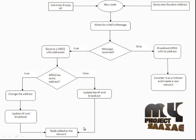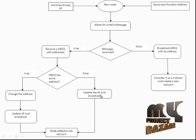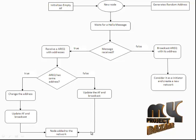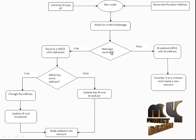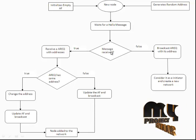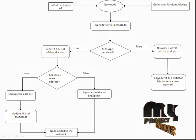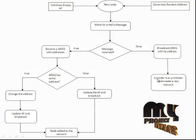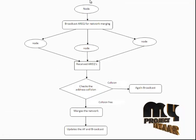The node is then joined in the network. If no address collision occurred, it updates the address filter, broadcasts the message, and joins the network. If no hello message is received for a long time, it acts as an initiator node and randomly creates a network, choosing a partition ID.